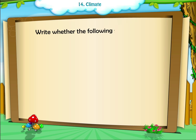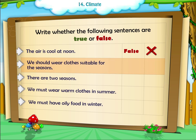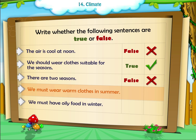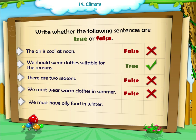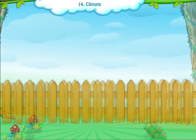Activity 5: Write whether the following sentences are true or false. 1. The air is cool at noon. 2. We should wear clothes suitable for the seasons. 3. There are two seasons. 4. We must wear warm clothes in summer. 5. We must have oily food in winter.